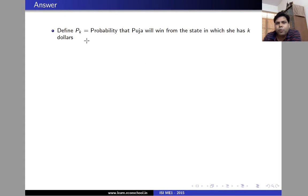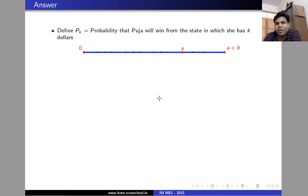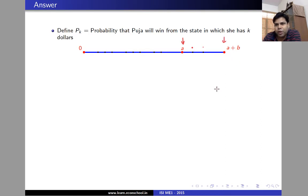In order to solve this problem we are going to define P_K as the probability that Pooja will win from the state in which she has K dollars. We can represent the state space in the form of a line. This is the current state where Pooja has A dollars, A plus one dollars, A plus two dollars, and so on. The terminal state where she wins all of Priya's money is at A plus B, and the terminal state where she loses all her money to Priya is at zero.